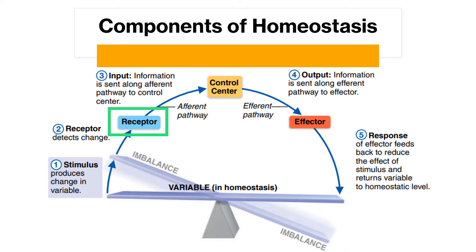The receptor is a type of sensor that monitors and responds to changes in the environment. It responds to such changes, called stimuli, by sending information to the second component — the control center — along the afferent pathway. It may help to remember that information traveling along the afferent pathway approaches the control center.